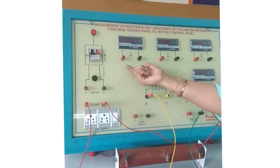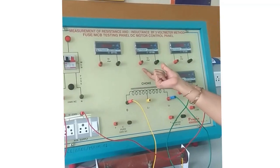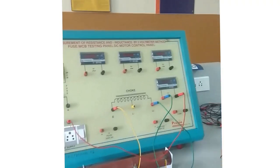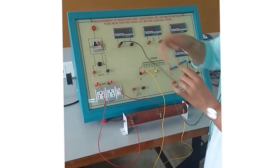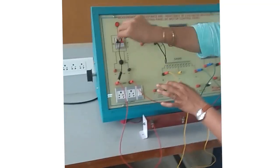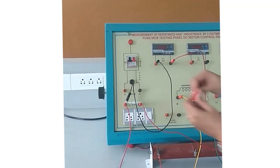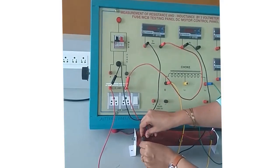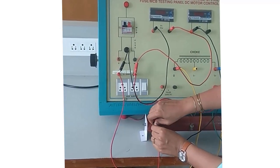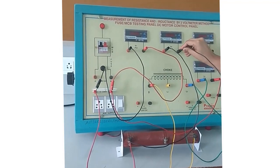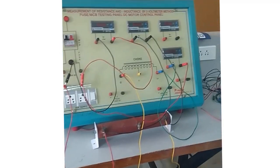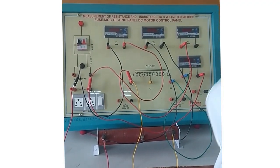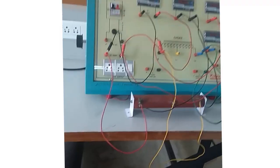Now, coming to the voltmeters. V1 will be connected across the supply voltage, V2 will be connected across the external resistance, and V3 will be connected across the choke coil. For the parallel connections: V1's starting terminal goes to the starting of the supply, and the other terminal connects to the neutral — this measures the voltage across the supply. V2 is connected across the resistance. Make sure there are no loose connections. V3's starting terminal connects to the starting terminal of the choke, and the second terminal connects to the ending terminal of the choke coil. The connections are now complete.